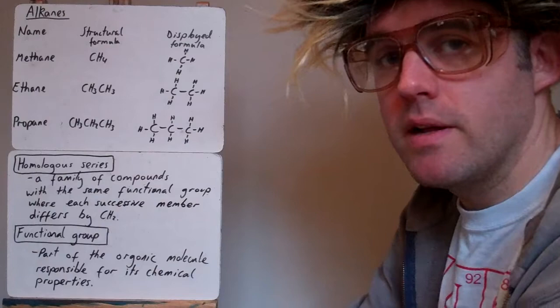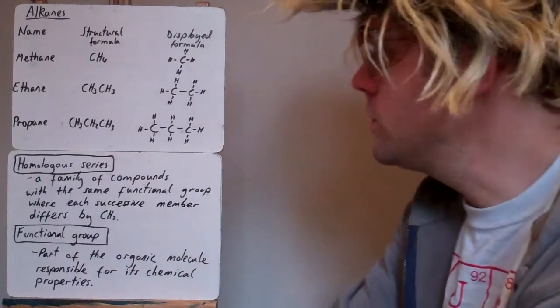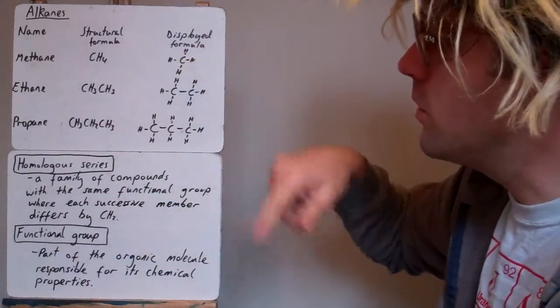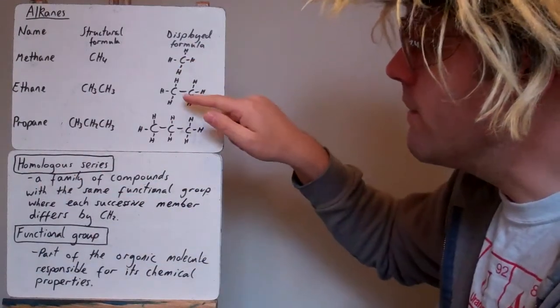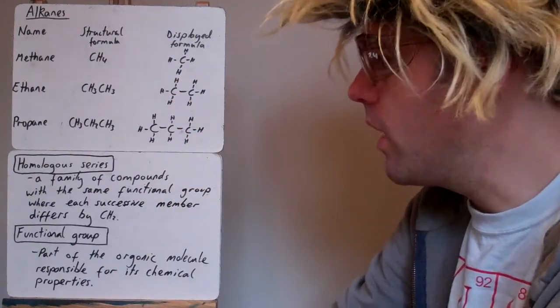Important things to remember about alkanes, well, in fact, about organic chemistry, is that every carbon makes four bonds. So, you can see here, methane, the carbon's bonded to four hydrogens. In ethane, it's got a carbon to carbon bond, and then three hydrogens. So, four bonds per carbon.